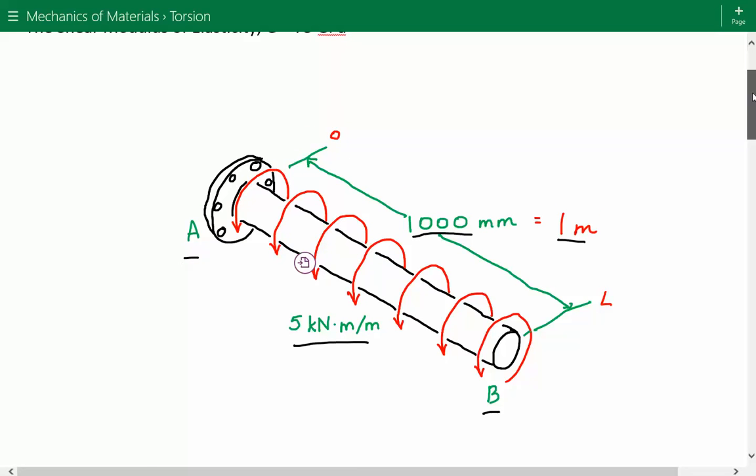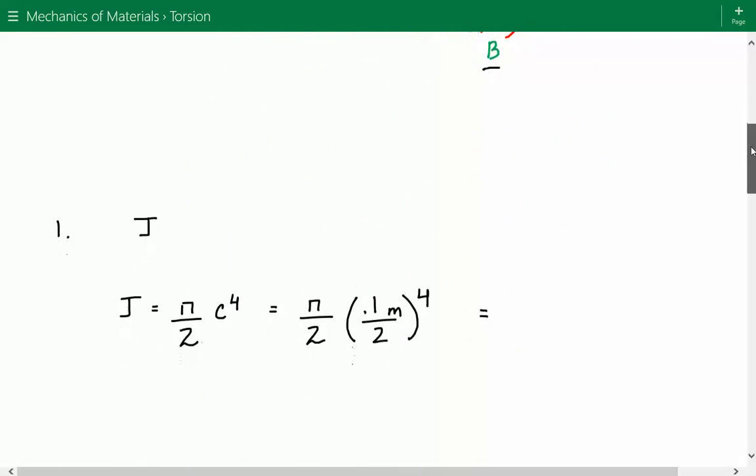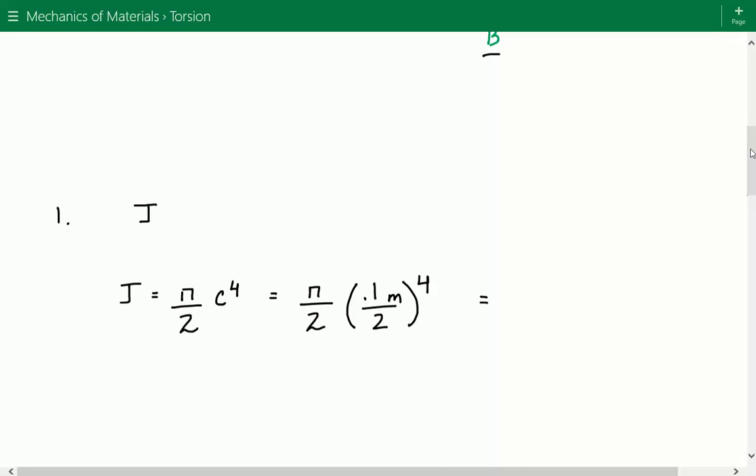The first thing we'll do is calculate the polar moment of inertia, denoted as J. For a solid circular shaft, J equals π/2 times c to the fourth power, where c is the outer radius of the cross-section. We plug in the numbers: π/2, and then...